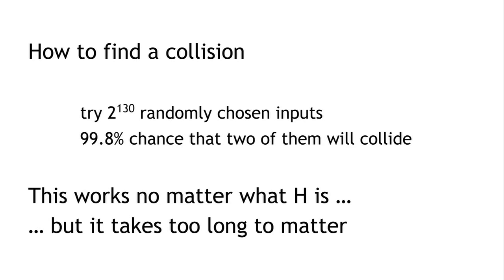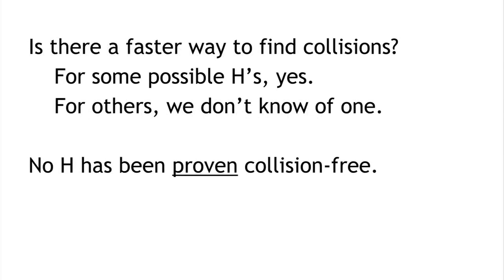The question is whether there's some other method that could be used on a particular hash function to find a collision faster. For some possible hash functions, of course there are — for example, if our hash function simply took the input modulo 2 to the 256, selecting the last 256 bits, then we'd know an easy collision: the values 3 and 3 plus 2 to the 256. For others, we don't know. There's no hash function in existence that has been proven to be collision-free; there are just some that people have tried really hard to find collisions in and haven't succeeded, so we choose to believe those are collision-free.